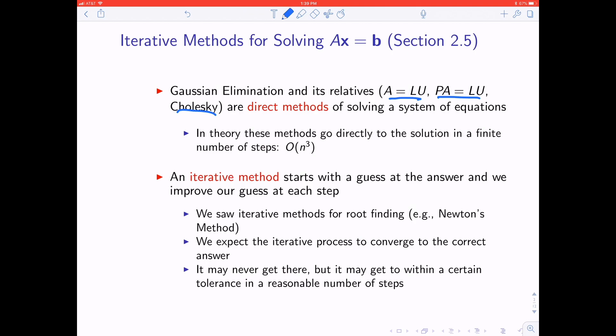You go straight to the solution by doing something to the matrix. These tend to be order n cubed methods if we're talking about an n by n matrix. On the other hand, you're familiar with the idea of iterative methods from, for instance, things like the bisection method and Newton's method.